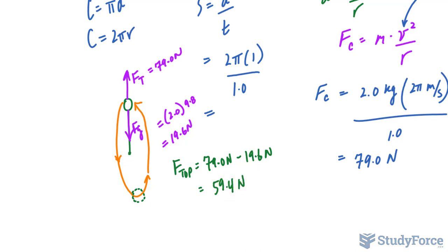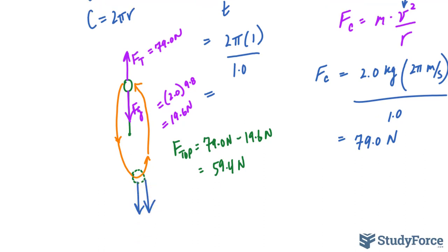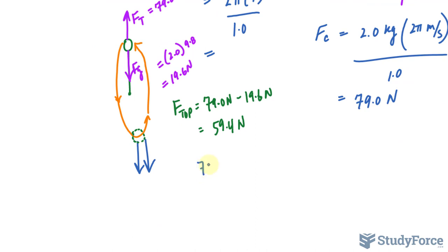Now let's find out the force at the bottom. So this time, both the tension force and gravity are in the same direction. So we'll be adding them, 79.0 newtons plus 19.6, they're both going in the same direction. So the force when it's at the bottom should be the sum of these two. And that's 98.6 newtons.